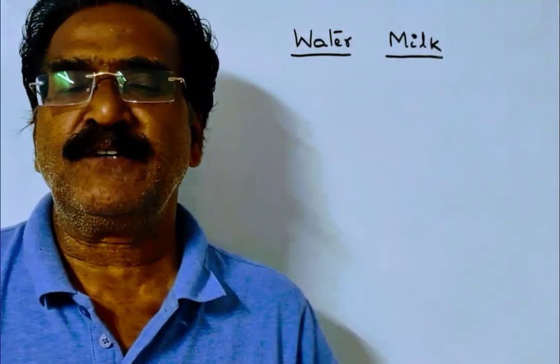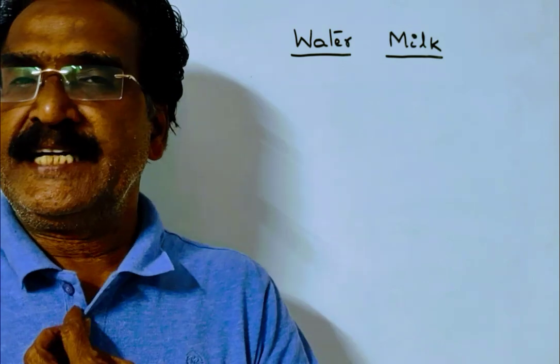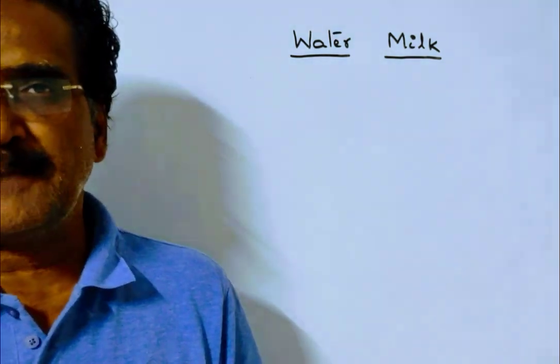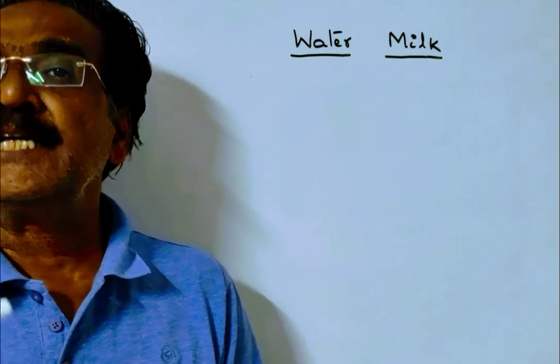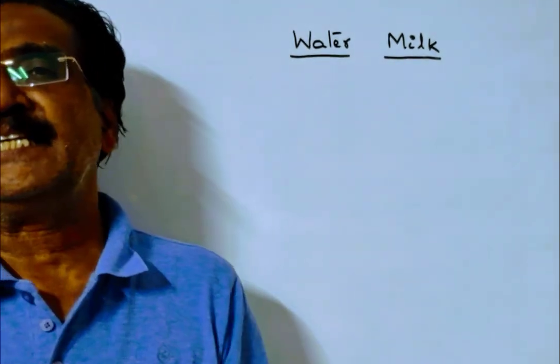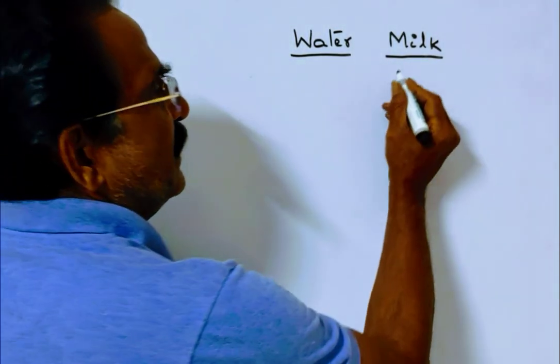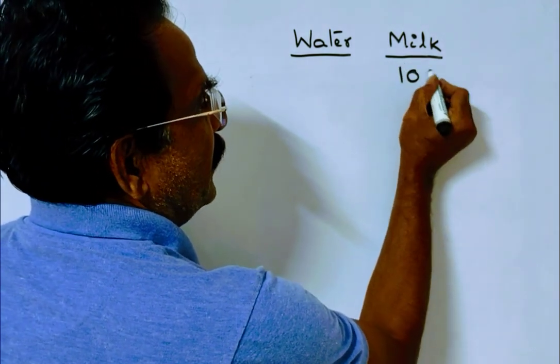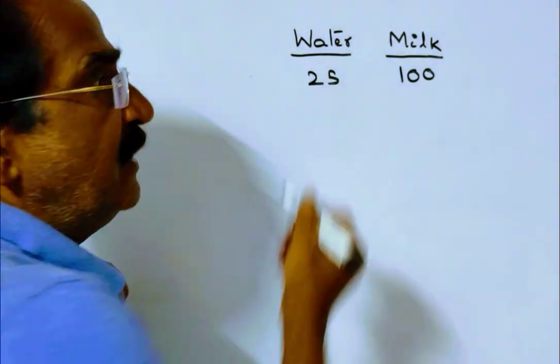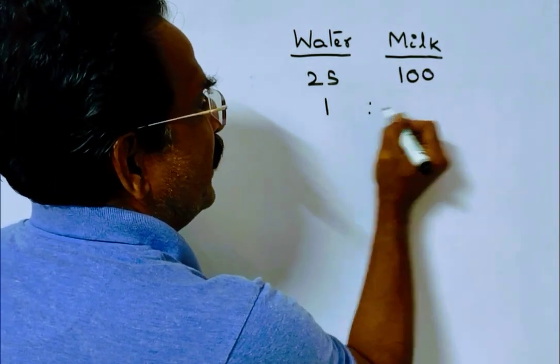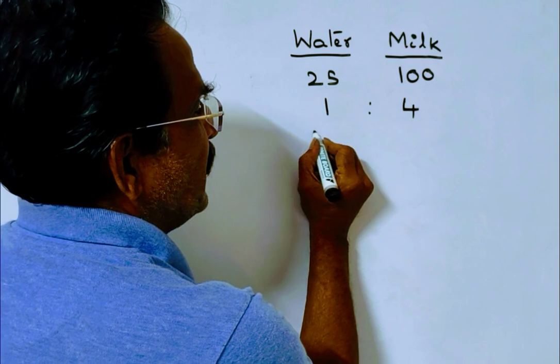Hi friends, good morning. Please look at the next problem in mixtures. A vessel contains a mixture in which water is 25 percent of the milk. That implies if milk is 100 liters, then water is 25 liters. The ratio of water and milk is 1:4.